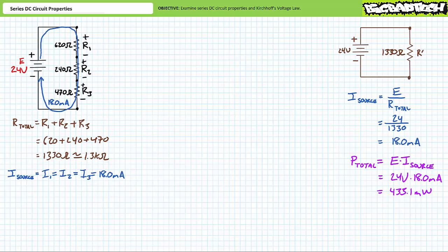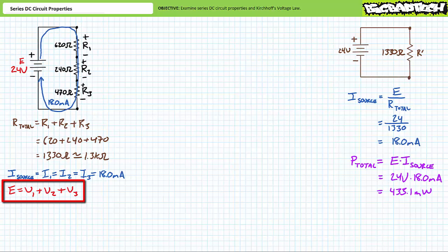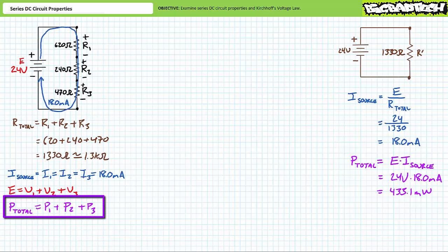In regards to the summation of individual voltage drops, for any closed loop the summation of voltage rises will be equal to the summation of voltage drops. There is one voltage rise induced by the 24-volt source and three voltage drops V1, V2, and V3. Therefore E equals V1 plus V2 plus V3. Similarly, power in equals power out. The source is supplying roughly 433.1 milliwatts, so P1 plus P2 plus P3 should equal 433.1 milliwatts. If any results fall outside this zone, they are wrong, and we need to revisit our calculations.